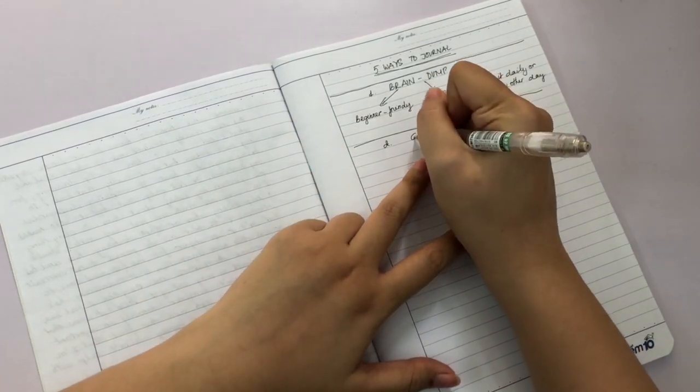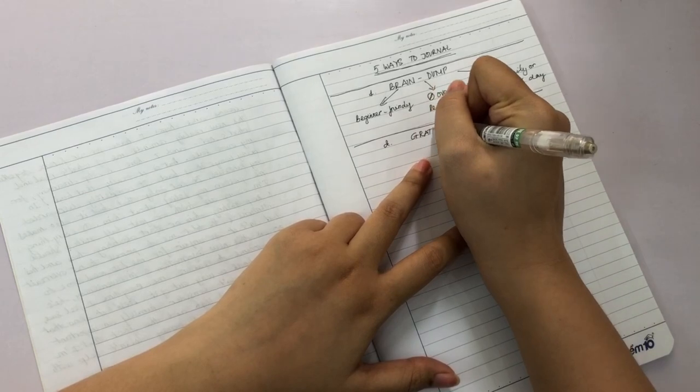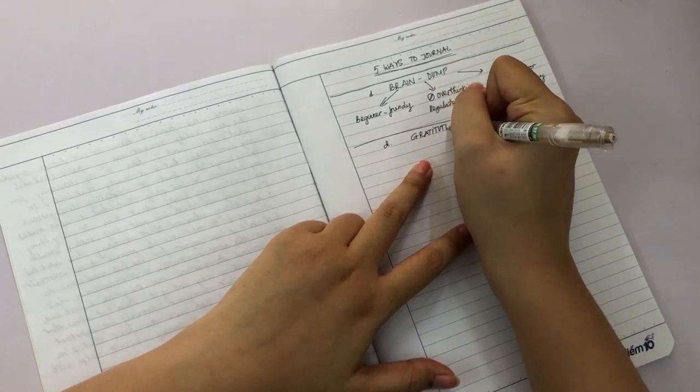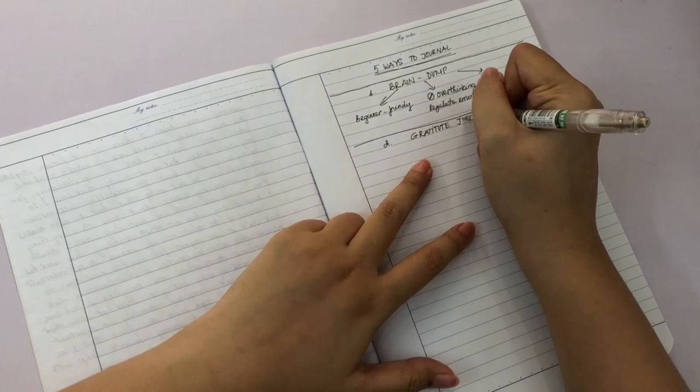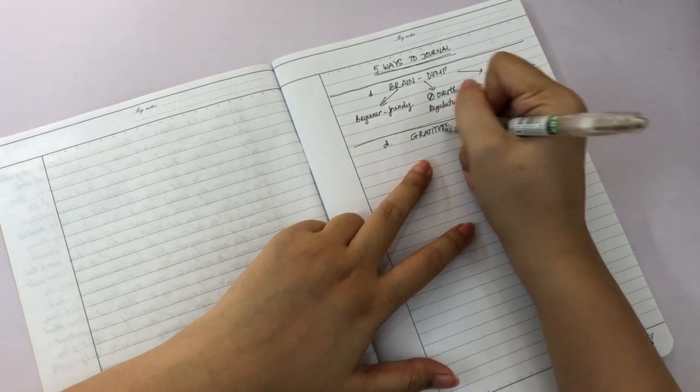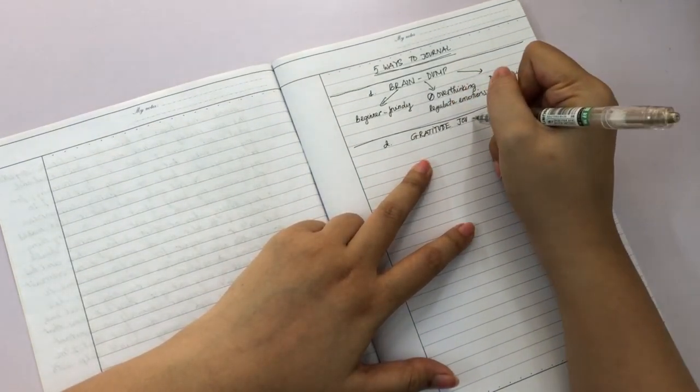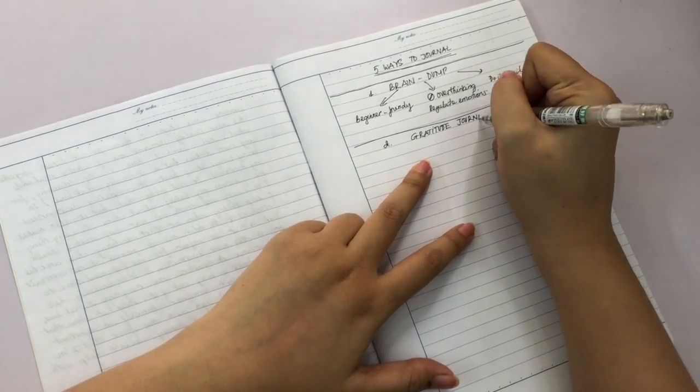The second kind of journal that I want to talk about in today's video, which is very popular for a lot of people who journal, is gratitude. If you do regular gratitude journaling, you're going to find a lot of happiness in your present moment.